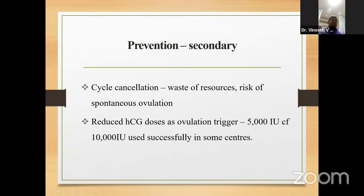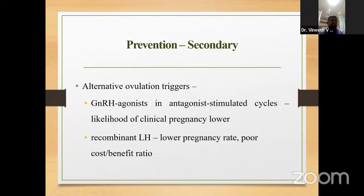Cycle cancellation can lead to wastage of resources, risk of spontaneous ovulation, and severe mental trauma to patients, so it should be avoided as far as possible. A reduced HCG dose — 5,000 instead of 10,000 — can be used as an ovulation trigger. Alternative triggers include GnRH agonists in antagonist-stimulated cycles — such as leuprolide and triptorelin — or recombinant LH. Recombinant LH can be used but pregnancy rates are lower and cost-benefit ratio is poor. To prevent life-threatening OHSS, always consider using GnRH agonists or recombinant LH as trigger.